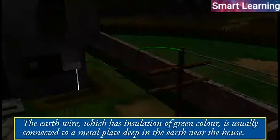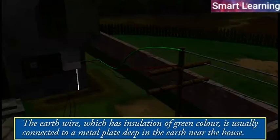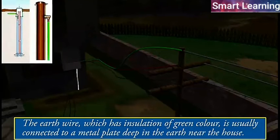The earth wire, which has insulation of green color, is usually connected to a metal plate deep in the earth near the house.